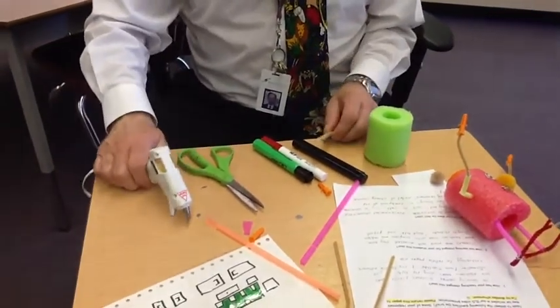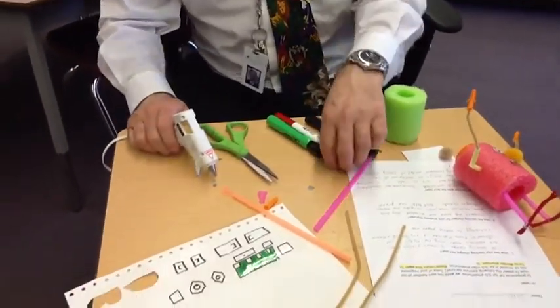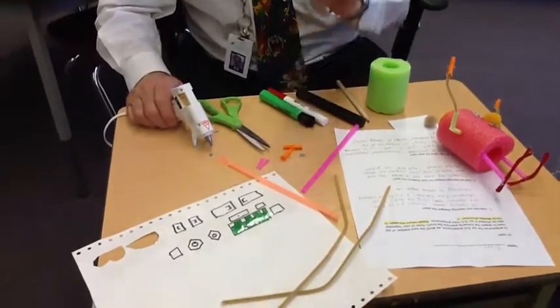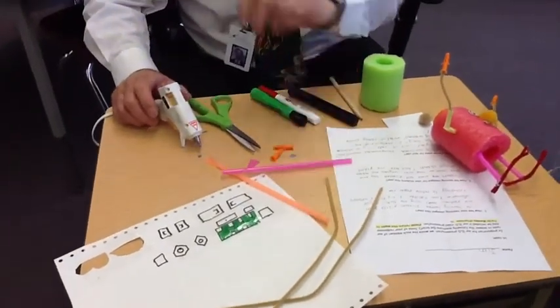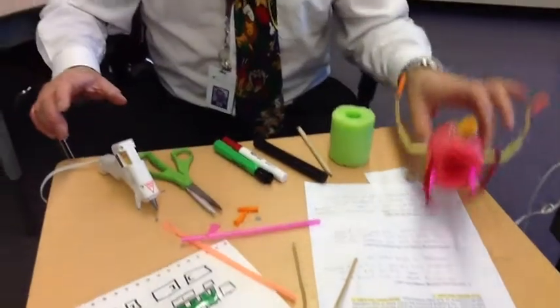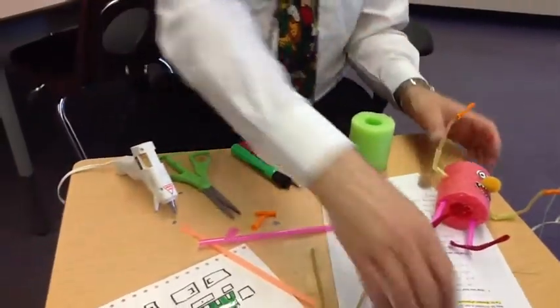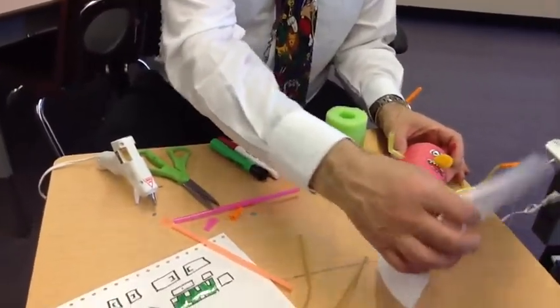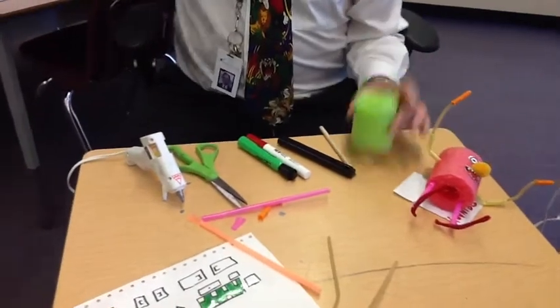a glue gun, some scissors, and we've got some materials. These are little clips that are used for holding screws in walls. We've got some straws, some pipe cleaners, and some paper and things. So what we're going to be doing today is we're going to be assembling.